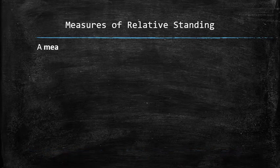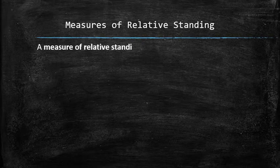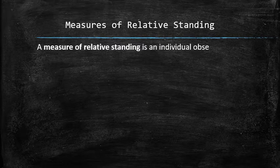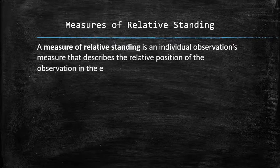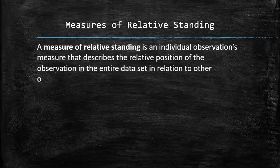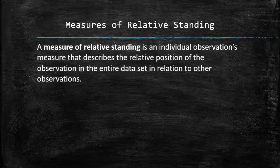Unlike the measures of center and variation, the measures of relative standing are individual measures for each observation. The purpose is to identify the relative position of each observation in the entire dataset in relation to other observations. The z-score of an observation can therefore be used as a rough measure of its relative standing.